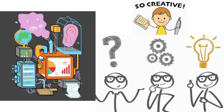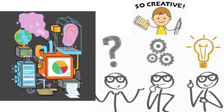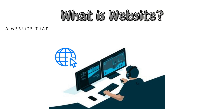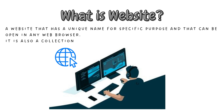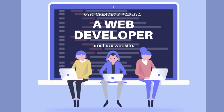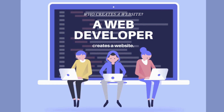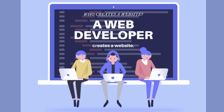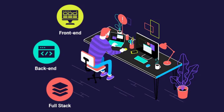Now you know why we are using these websites. A website has a unique name for a specific purpose and can be opened in any web browser. It is a collection of web pages over the internet. A web developer creates a website — any person who creates a website is a web developer. There are three types of web developers: front-end, back-end and full-stack.